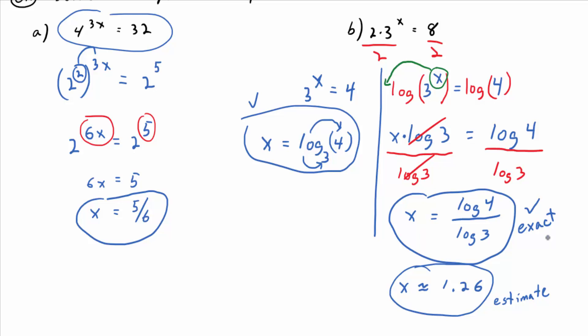The nice thing about exact answers, if you need a more accurate estimate, you can always get it later on. If you just write down 1.26 and forget about the rest of your work, you can't improve on that estimate.